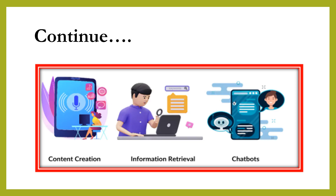This is just one example of how retrieval augmented generation can be used to improve the quality of text generated by NLP systems, making them more human-like and personalized.